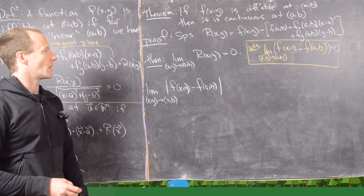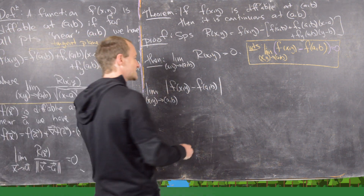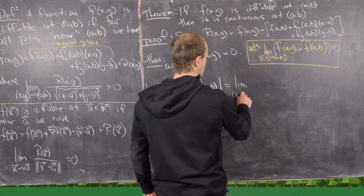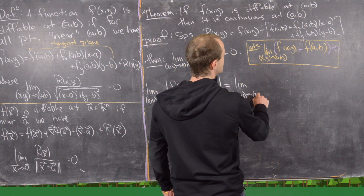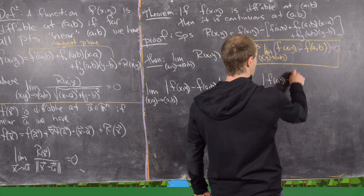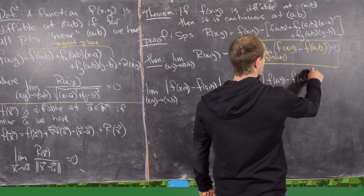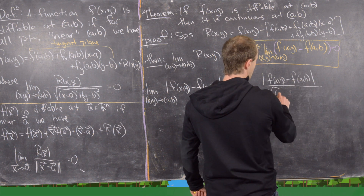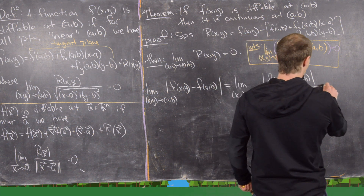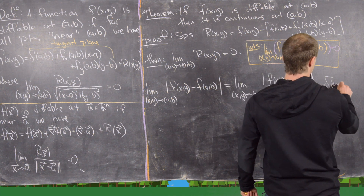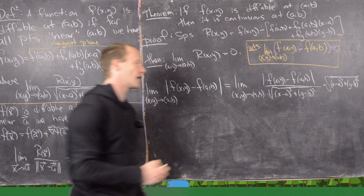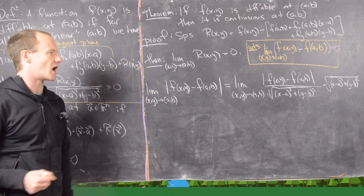Notice that this is the same as the limit as (x,y) goes to (a,b) of the absolute value of f(x,y) minus f(a,b) over √((x−a)²+(y−b)²), times √((x−a)²+(y−b)²). I've just multiplied by one in a somewhat complicated way.